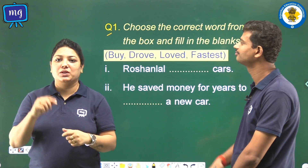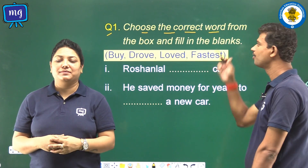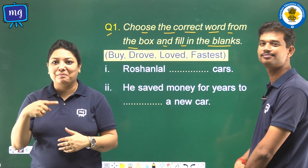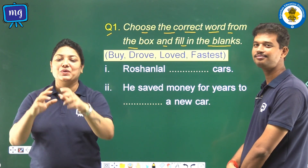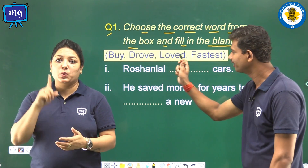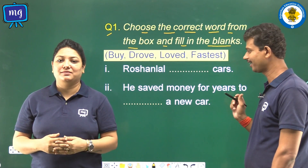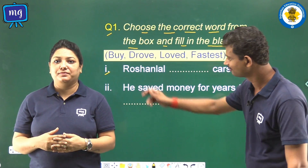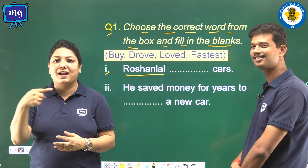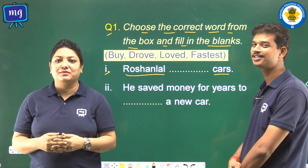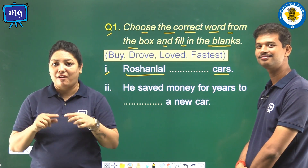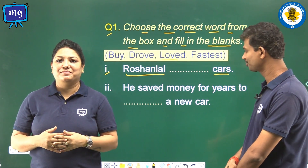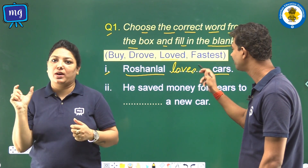Question 1: Choose the correct word from the box and fill in the blanks. In this question you have to choose one correct word from the box and write it in the blanks. First: Rosenlal dash cars. See in the box — Rosenlal loved cars. So we shall write 'loved' in the blank.